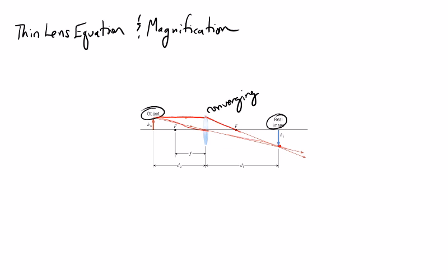So just kind of glancing at it, I would say, besides it being real, that it's also an inverted image. And I would say that it looks like HI is a little bit larger. But that's one of the things we're going to try to figure out. The other one is I would love to know where exactly is this image. So the thin lens equation is designed to do that.